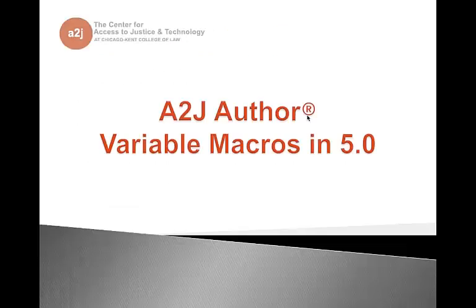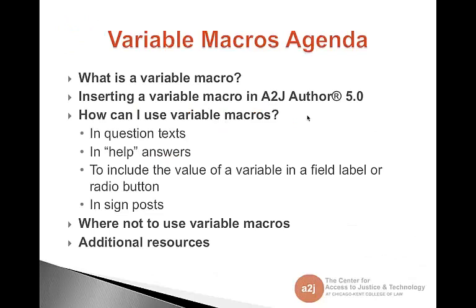Today we're going to be talking about variable macros in 5.0. We'll run through what a variable macro is, how to insert a variable macro in A2J Author 5.0, and the various situations in which you can use a variable macro — in question texts, in help answers, to include the value of a variable in a field label or a radio button, and in signposts.